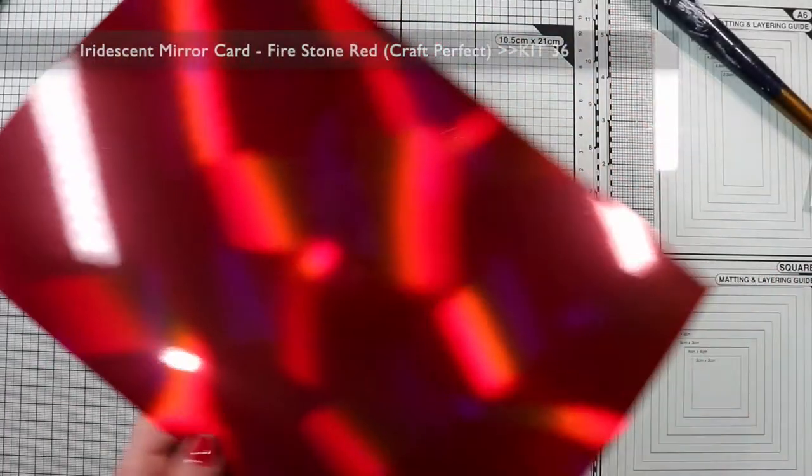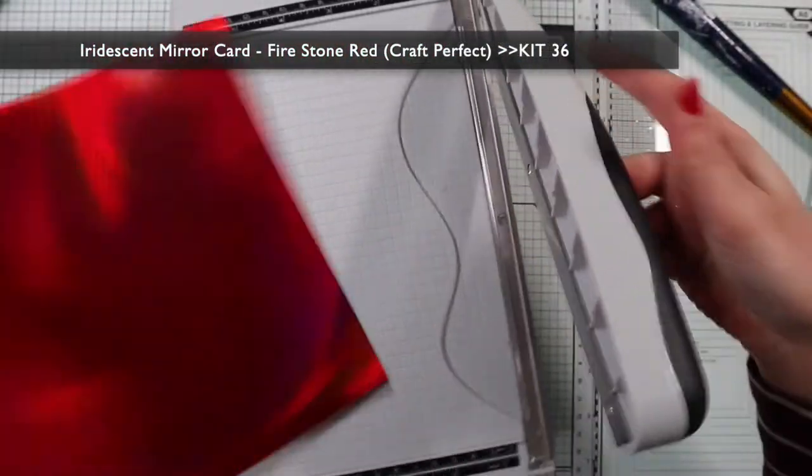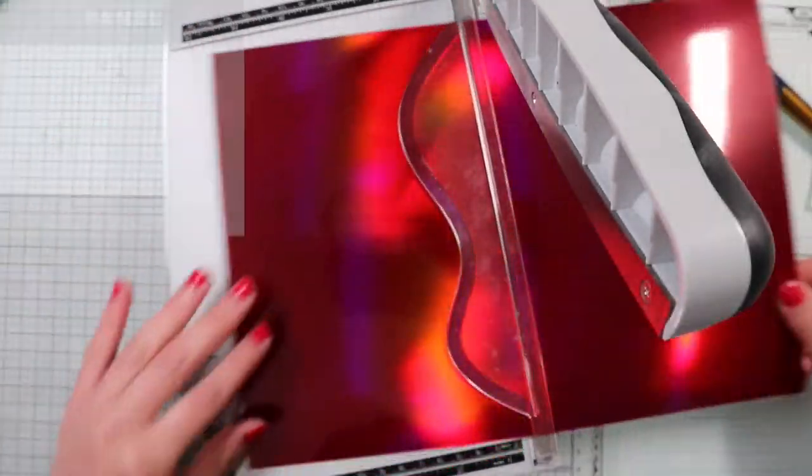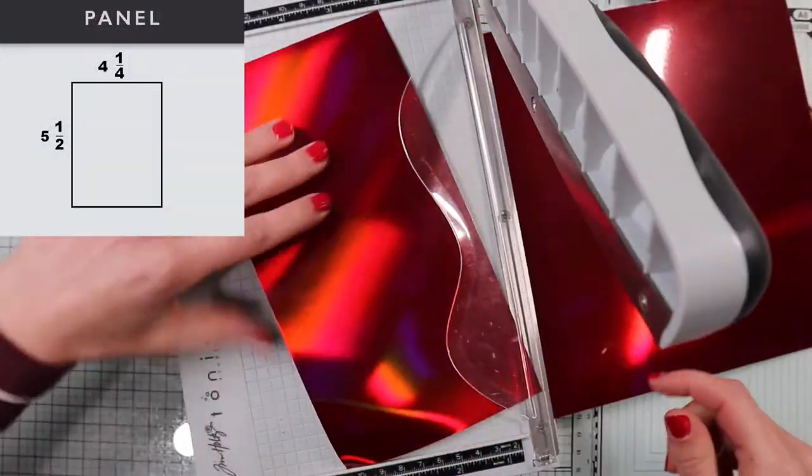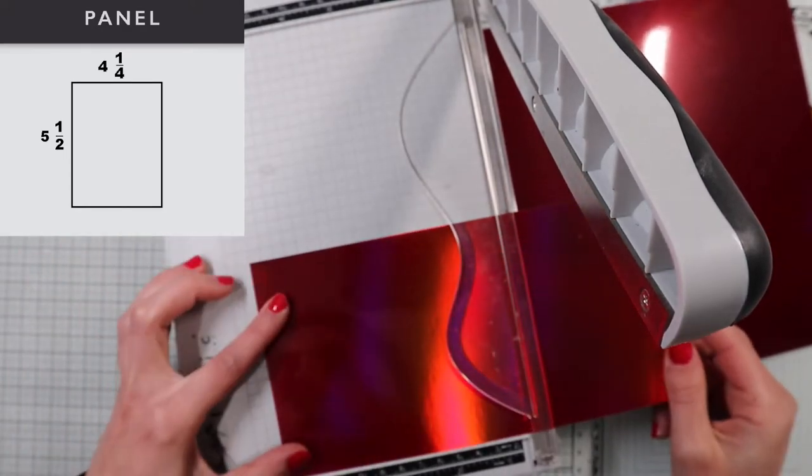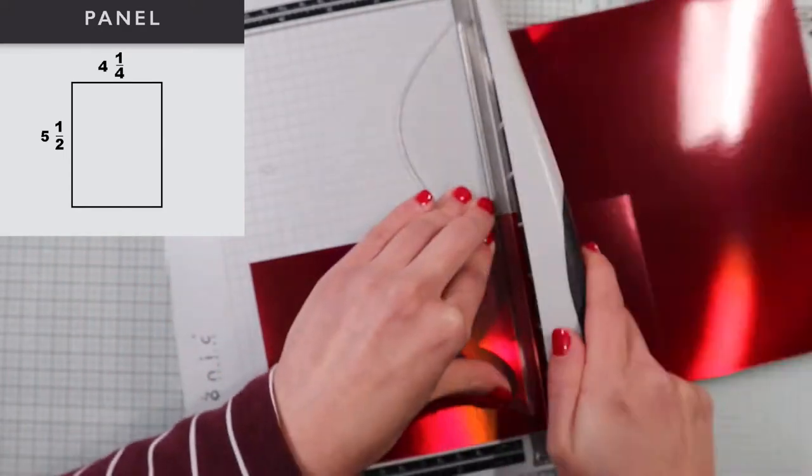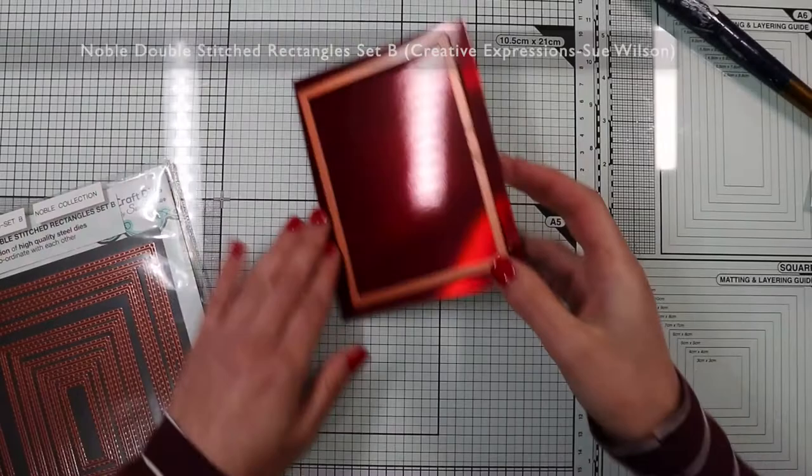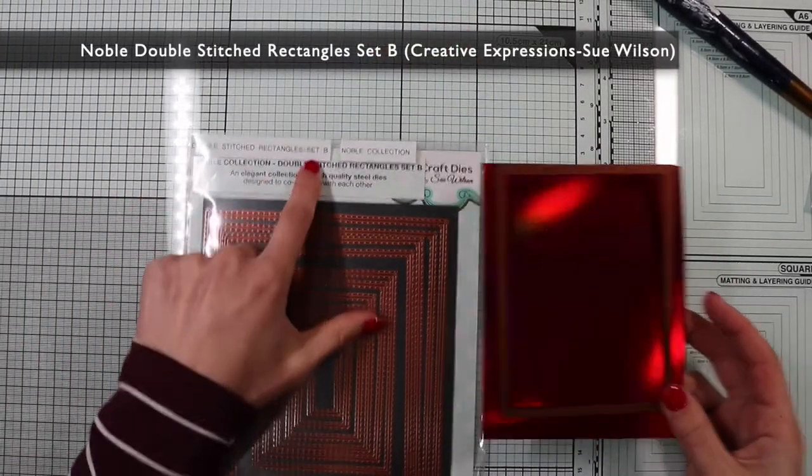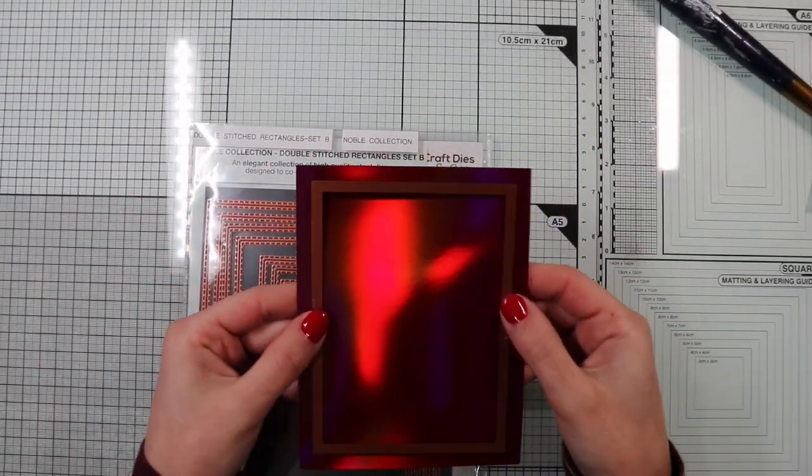So now I prepare a frame with this iridescent mirror card from the kit. First, I make a 4 ¼ by 5 ½ panel. Then, with this stitch rectangle die, I make the frame.